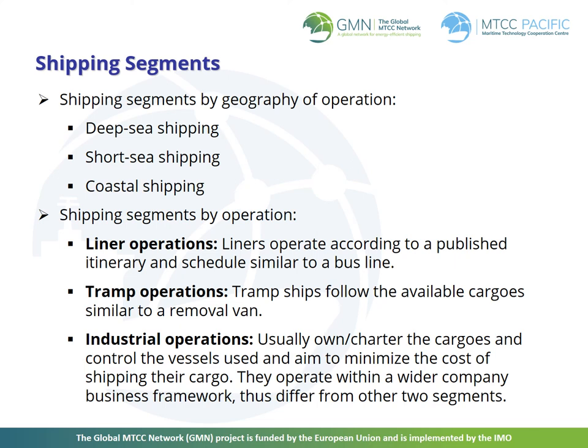Apart from the different types of ships and cargoes, there are also different shipping segments according to the geography of operations. Some include deep sea shipping, short sea shipping and coastal shipping, which is common in the region, for example in PNG and Fiji. Shipping segments are defined by the scheduled trades they are engaged in. The first is liner operations, where a liner operates according to a published itinerary and schedule, similar to a bus line.